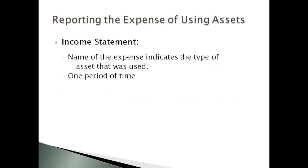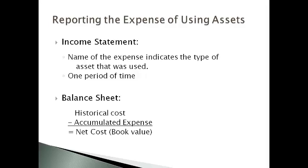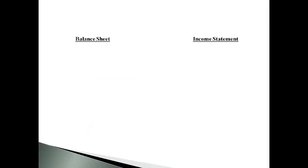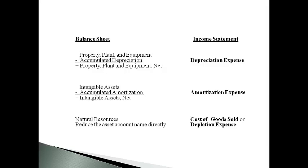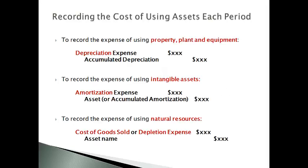The name of the expense reported on the income statement indicates the type of asset that was used. The income statement reports only the expense for one period of time. Historical cost less the total expense of using the asset to date — the accumulated amount — is reported on the balance sheet as net cost or book value. The cost of using property, plant, and equipment is reported as depreciation expense; the cost of using intangible assets is reported as amortization expense; and the cost of using natural resources is reported as cost of goods sold or depletion expense. Accountants record the expense of using long-term assets as an adjusting entry at the end of each period, increasing the expense account and adding the amount to the contra-asset account, or subtracting from the intangible asset or natural resource.